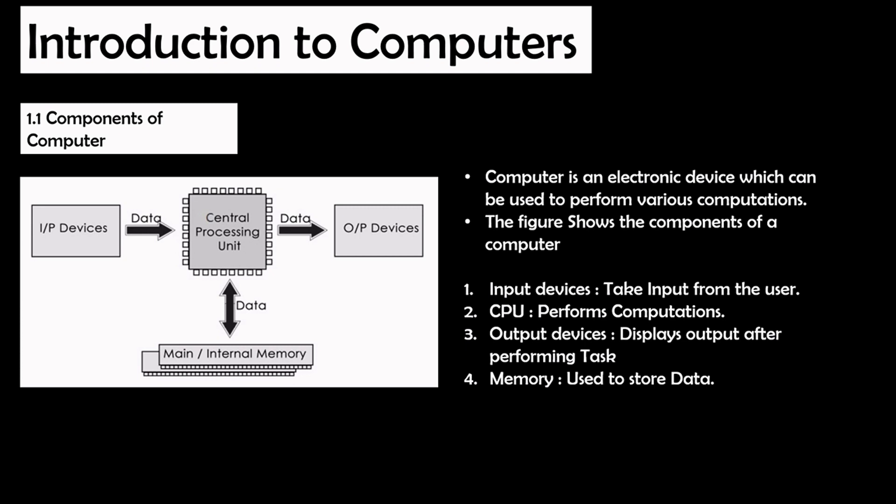Whenever a user clicks on a key, the result will be displayed on the monitor. The second component is the central processing unit, which is used to perform various tasks. These tasks can be arithmetic operations — for example, addition, subtraction, multiplication, and division.